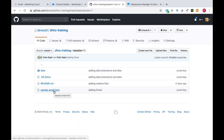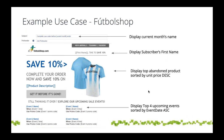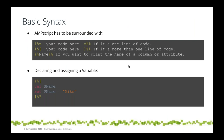Let's look at the basic syntax. AMPscript has to be surrounded with percent-percent. If your code is just one line calling a function to print a value, you use percent-percent equal-sign, then close with equals-percent-percent. This only works when calling a function that returns a value in one line — it does not work with if statements or for loops.